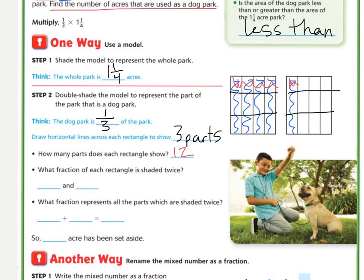So now, what fraction of each rectangle is shaded twice? Well, in the first one, we have, there's four of the twelve, so we're going to write four-twelfths. In the second one, there's only one that's double shaded, so one-twelfth. So what fraction represents all the parts that are shaded twice? We would have four-twelfths plus one-twelfth. Since the denominators are the same, we just add them together. And we get five-twelfths of an acre has been set aside for the dog park.